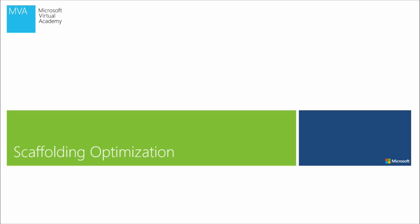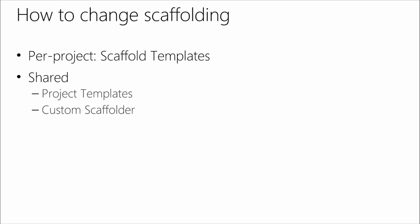So that's really it as far as the templates go — that's what's in the box. Now we'll look at a little bit of scaffolding optimization. We can customize what HTML is output, and we can take advantage of it to do more Bootstrap-specific stuff — either per project using scaffold templates, or at a shared level across multiple projects.